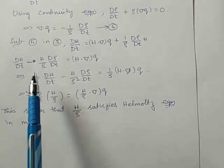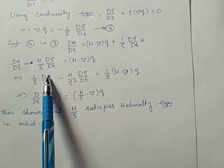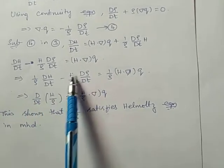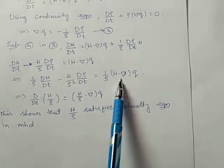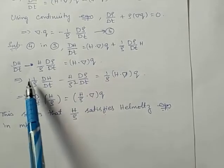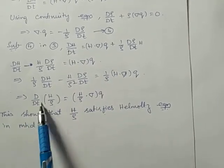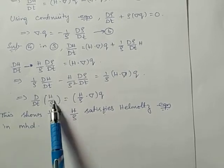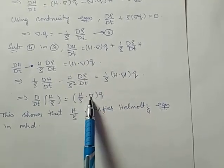Divide this equation by rho: one by rho dH by dt minus H by rho squared d rho by dt equals one by rho H dot del q. This we can write as d by dt of H by rho. If we apply quotient rule here, we get this term. RHS is H by rho dot del q.